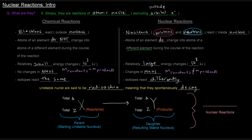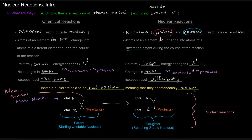Nuclear reactions are written with the atomic symbol X, which tells us which element's nucleus we're talking about. A is the mass number — the number of nucleons, which is the number of protons plus the number of neutrons in that nucleus. Z is the atomic number, which is the number of protons.